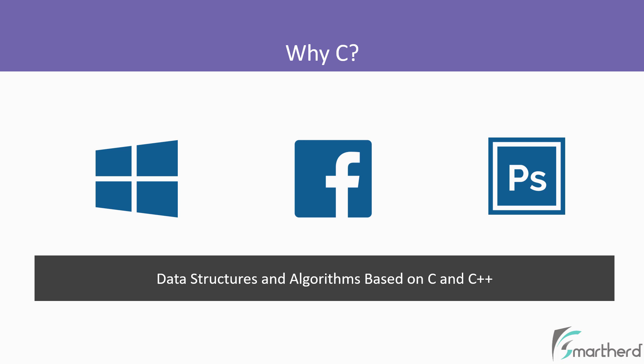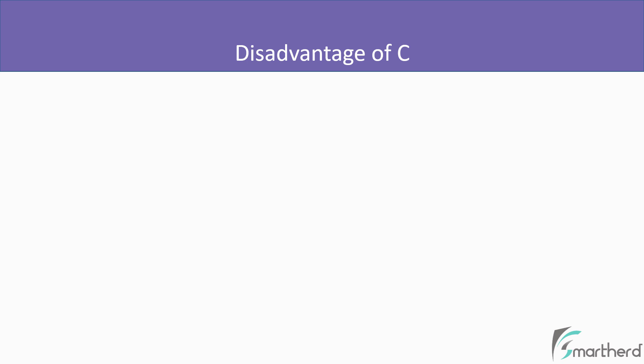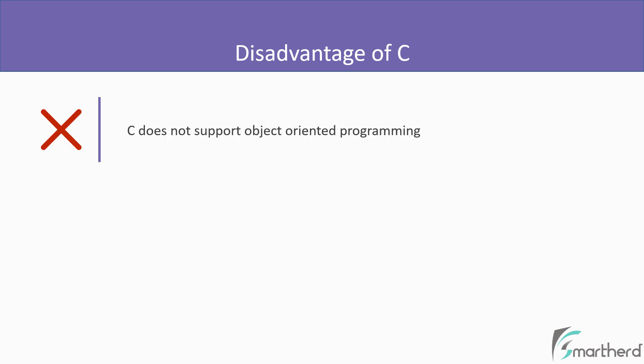Now, C is a very old language, so it lacks the capability to support object-oriented programming. But its shortcoming is fulfilled by C++ language, which fully supports object-oriented programming. So first, let's learn C and then C++.